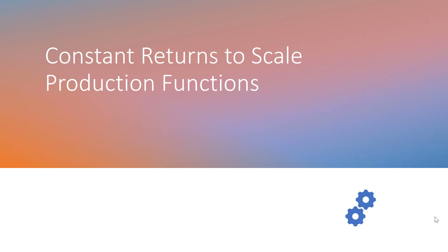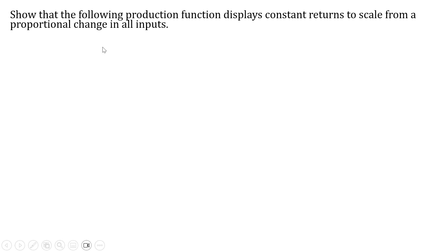We're going to look at some production functions and show that they display the property of constant returns to scale. Show that the following production function displays constant returns to scale from a proportional change in all inputs.